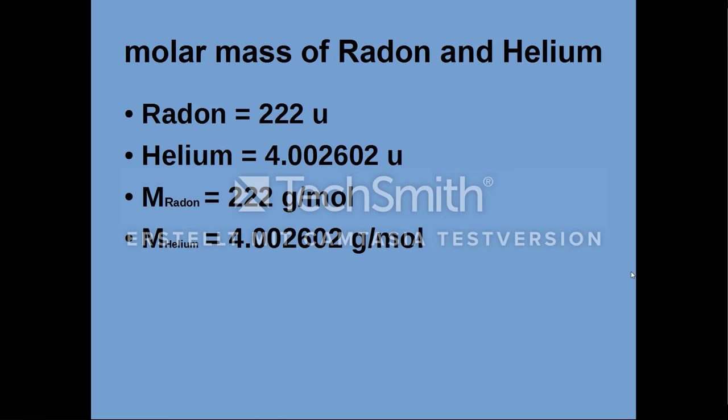Radon has an atomic mass of 222U. Helium has an atomic mass of 4.002602U. Therefore, the molar mass of radon is 222 g per mole and the molar mass of helium is 4.002602 g per mole.